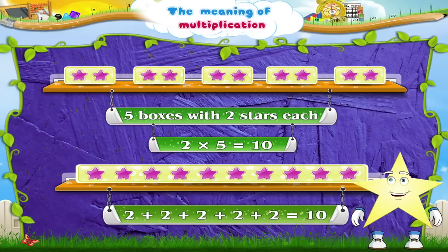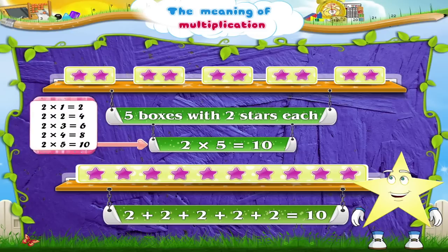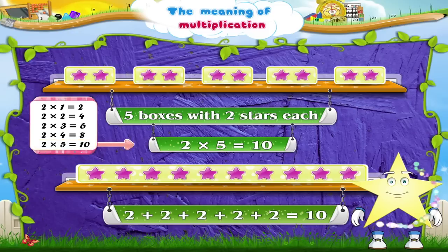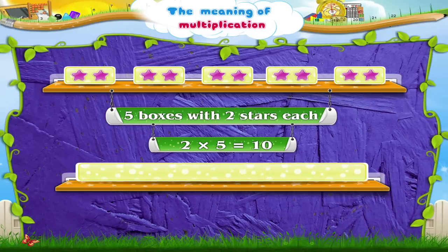Remember, Starry? Doing the multiplication, two multiplied by five means saying the two times table up to two fives. Wasn't that easy? Yes.